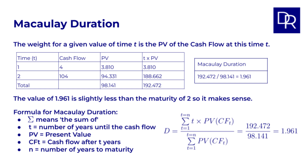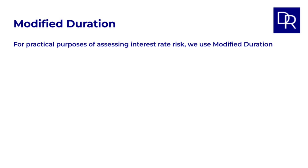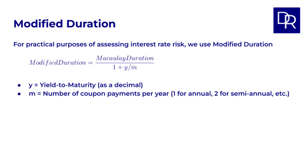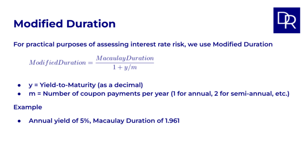Note that the only difference between the numerator and denominator is that the numerator has the number of years t. Macaulay duration gives us this intuitive weighted average time to the cash flows of a bond, but for practical purposes of assessing interest rate risk, we use modified duration. The formula for modified duration is the Macaulay duration divided by 1 plus y over m, where y is the yield to maturity as a decimal and m is the number of coupon payments per year — here 1 for annual. For our example bond with an annual yield of 5% and a Macaulay duration of 1.961, the modified duration is 1.961 divided by 1.05, so 1.868.